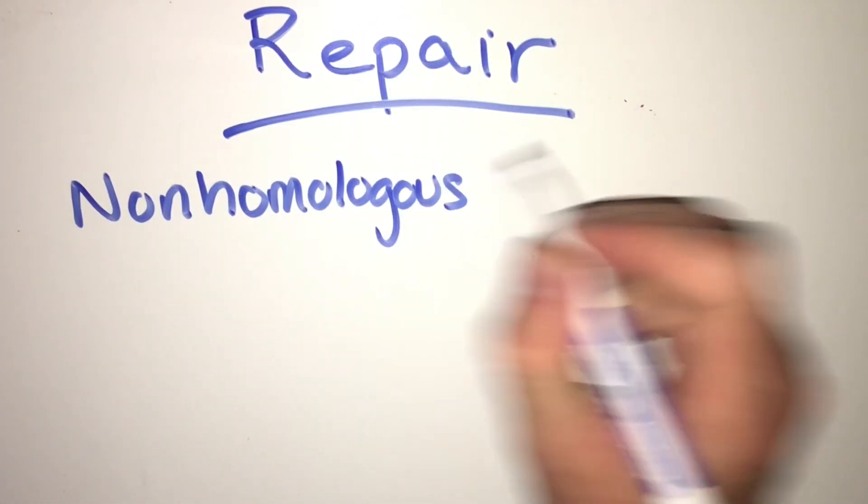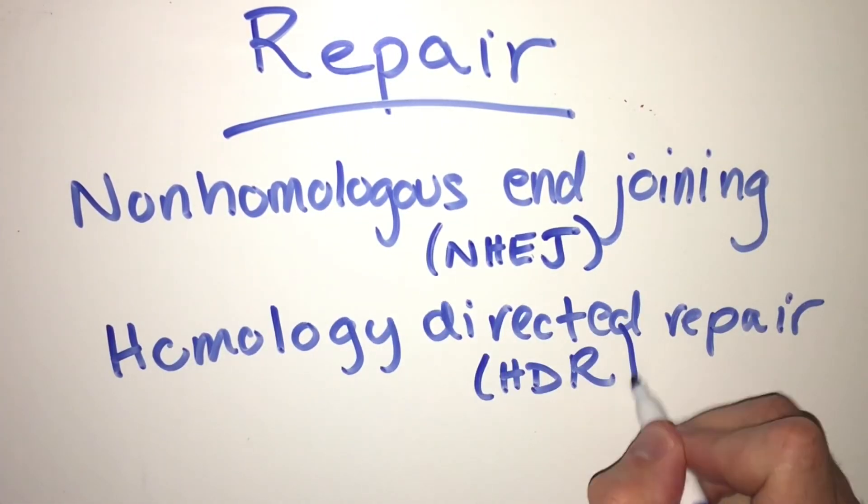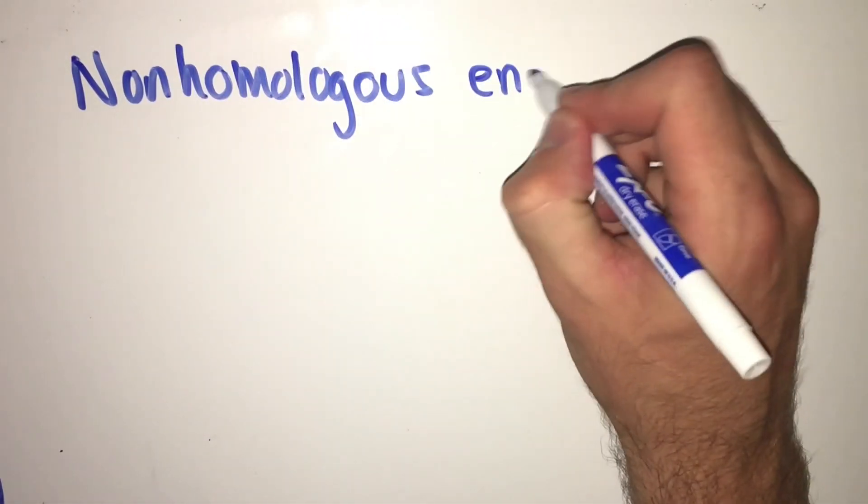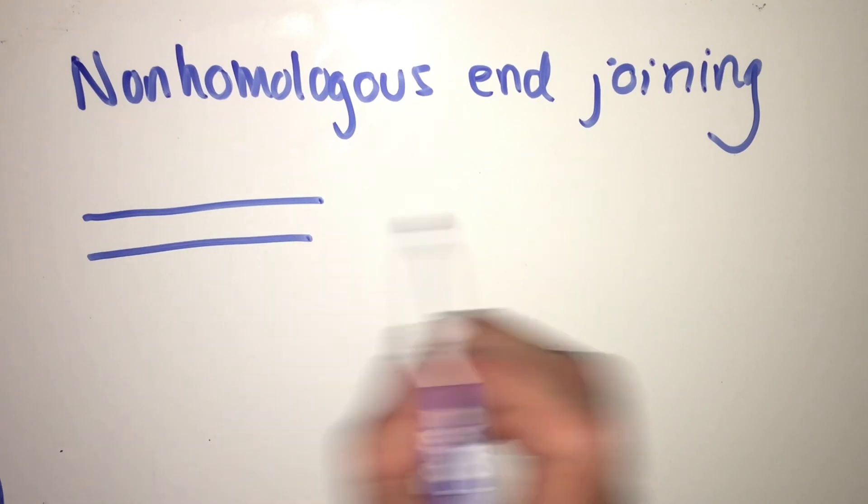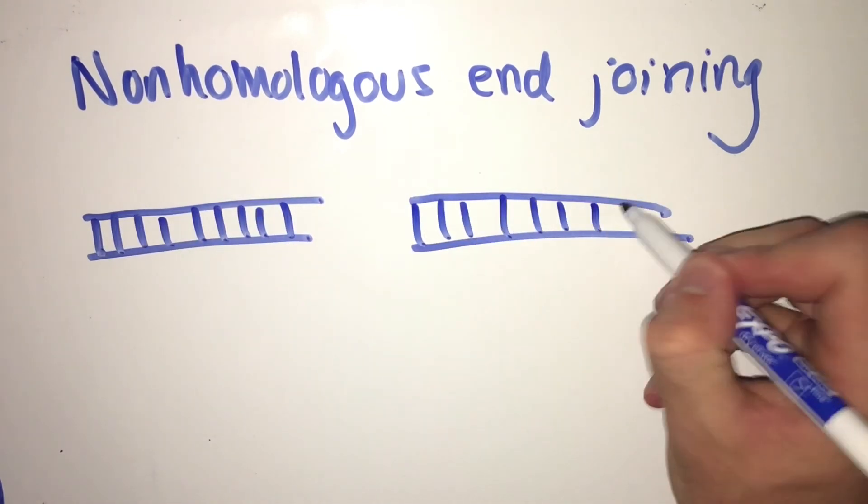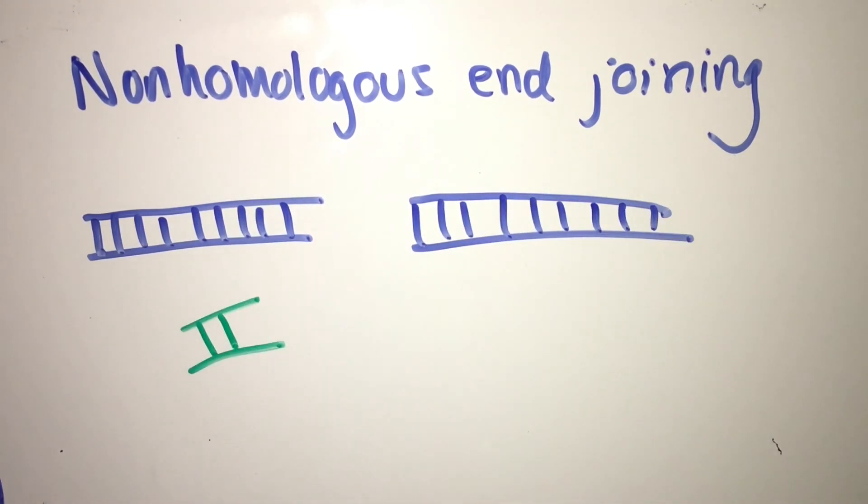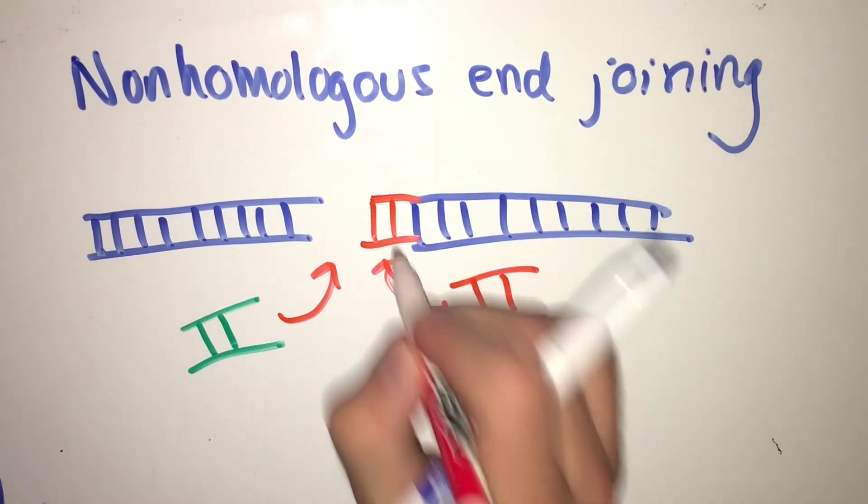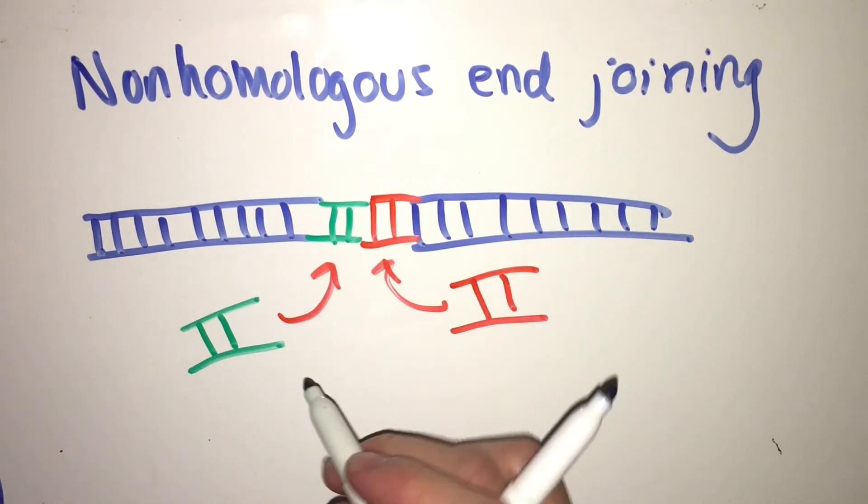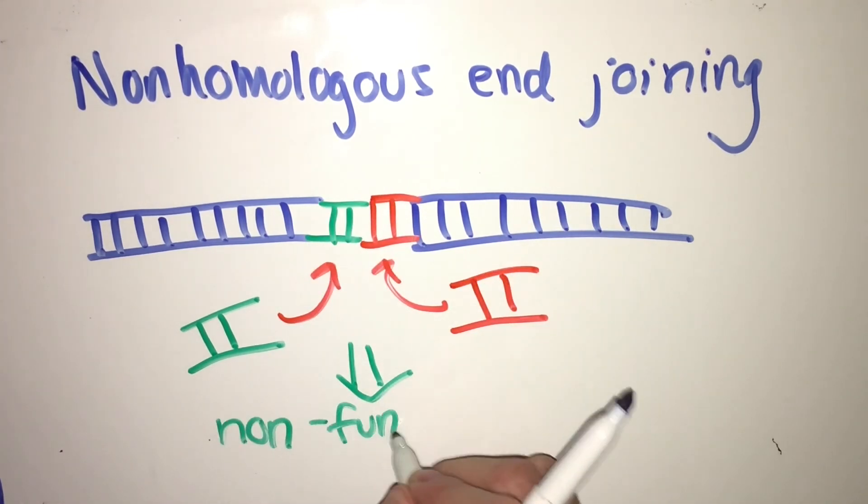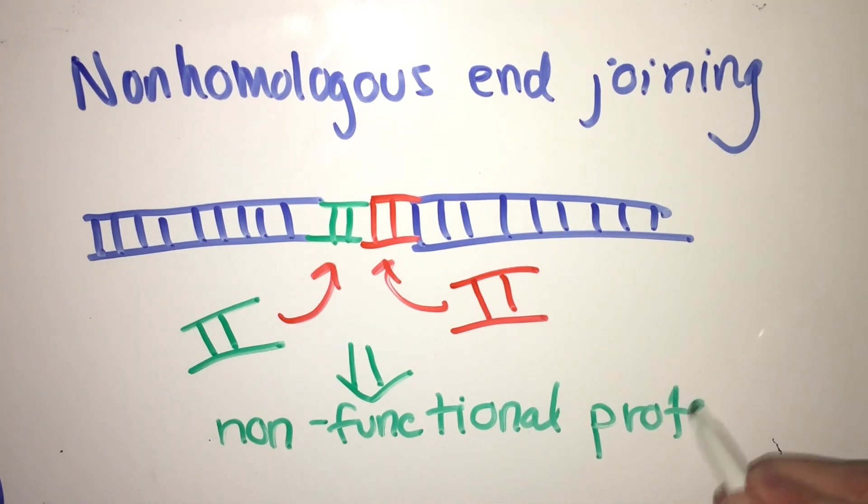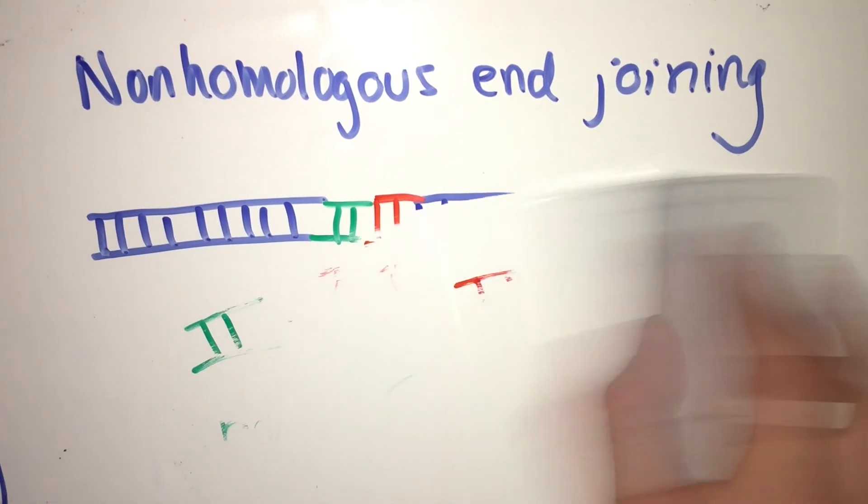To repair this break, the cells utilize two pathways: non-homologous end-joining, or homology-directed repair. Non-homologous end-joining, or NHEJ, is quick and efficient but sloppy and introduces errors into the repaired gene. For gene knockouts, however, this is ideal. The goal is that the random nature of NHEJ will give rise to nucleotide insertions or deletions that will disrupt the reading frame on the DNA and produce a non-functional protein, resulting in a total or partial gene knockout.